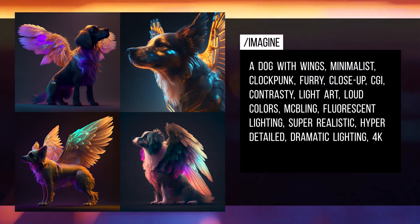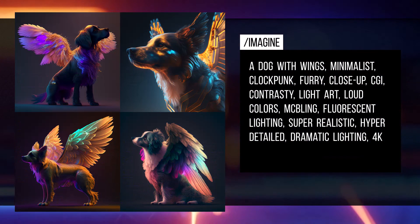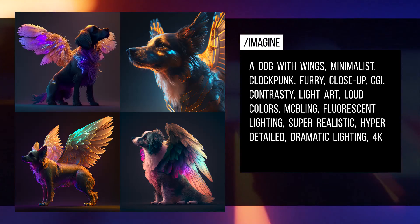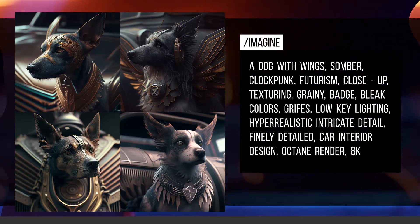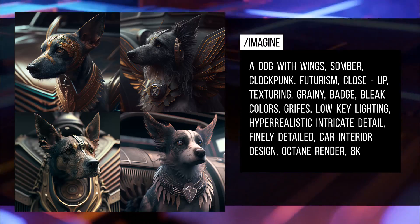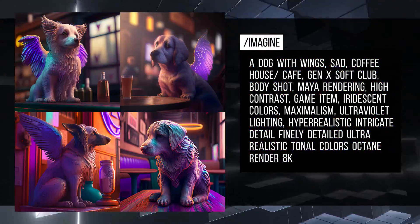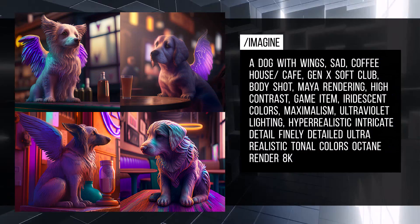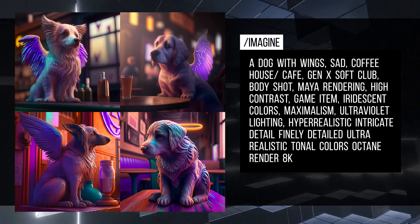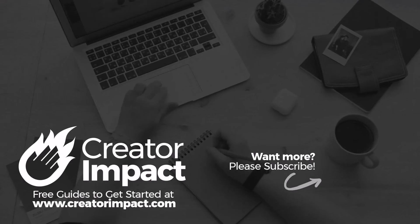This one here is a little more colorful — another great example of styles. Clock punk — didn't even know that was a thing. Also clock punk futurism, texturing, and grainy. Each one has the same subject but a completely different look, which I like. And this one here has a more purpley maximalist look — a really cool and great looking image.